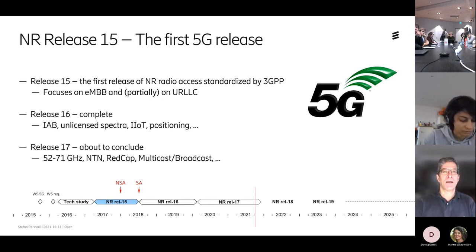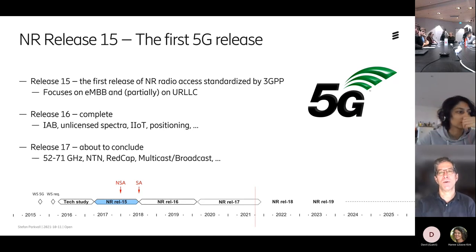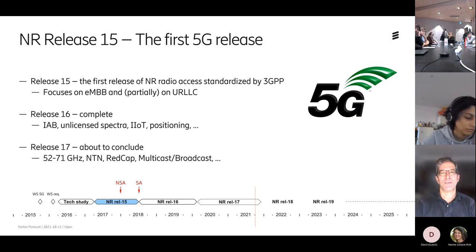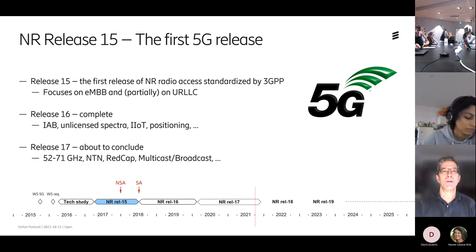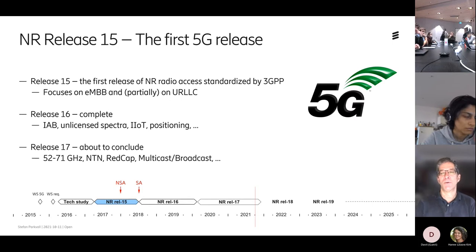Release 16 was completed at the beginning of last year and includes integrated access and backhaul, support for unlicensed spectrum, enhanced URLLC, industrial networking, and positioning. Release 17 is about to conclude at the end of this year. It covers frequencies up to 71 GHz, satellite integration (NTN), reduced capability devices (RedCap) for industrial IoT, and multicast/broadcast.